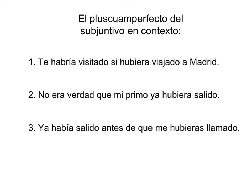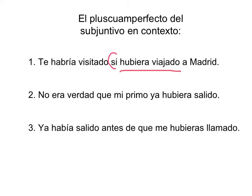Ahora vamos a revisar el pluscuamperfecto del subjuntivo en contexto, con tres ejemplos en oraciones completas. Número uno: te habría visitado si hubiera viajado a Madrid — I would have visited you if I had traveled to Madrid. Tenemos el pluscuamperfecto del subjuntivo del verbo viajar en una cláusula con sí, con el condicional.